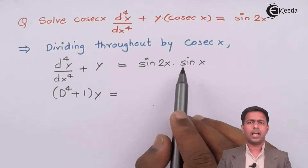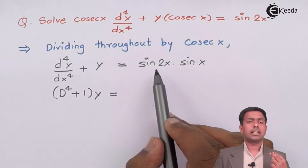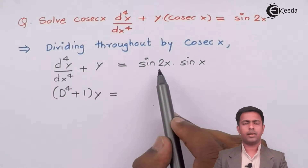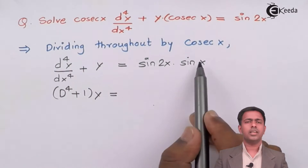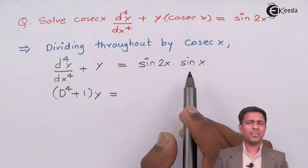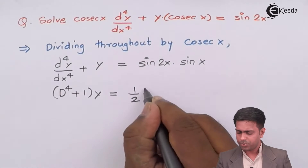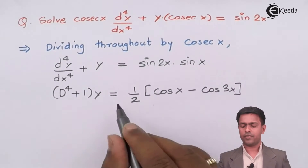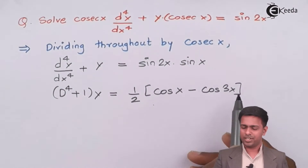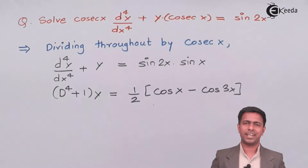If we want to apply the operator rule on the RHS, we can't apply it on a product of two sine terms — we need a plus or minus sign between trigonometric functions. So we use the defactorization formula: sine A · sine B = ½[cos(A−B) − cos(A+B)], giving us ½[cos x − cos 3x].